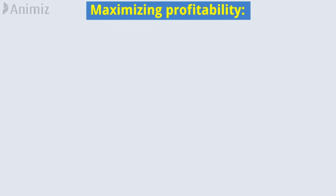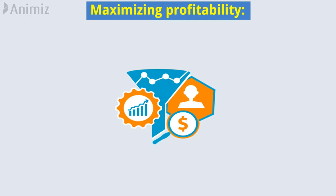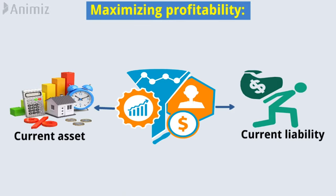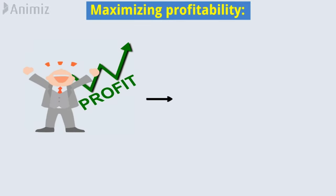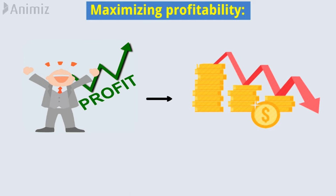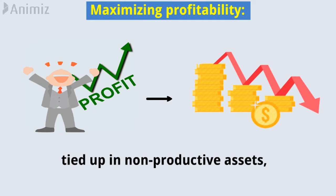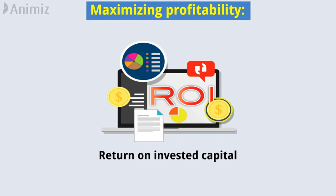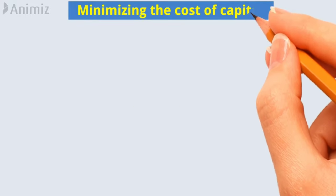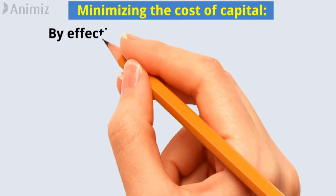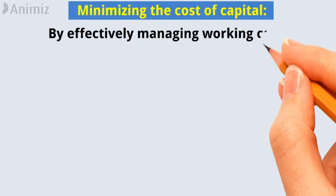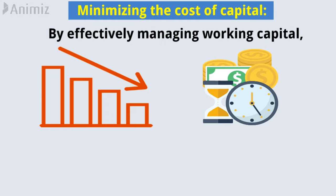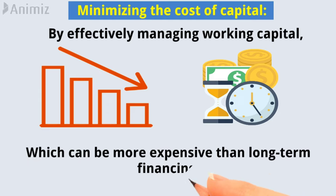Maximizing profitability: by optimizing the balance between current assets and liabilities, a company can improve its profitability by minimizing the amount of working capital tied up in non-productive assets and maximizing the return on invested capital. Minimizing the cost of capital: by effectively managing working capital, a company can reduce the need for short-term financing, which can be more expensive than long-term financing.